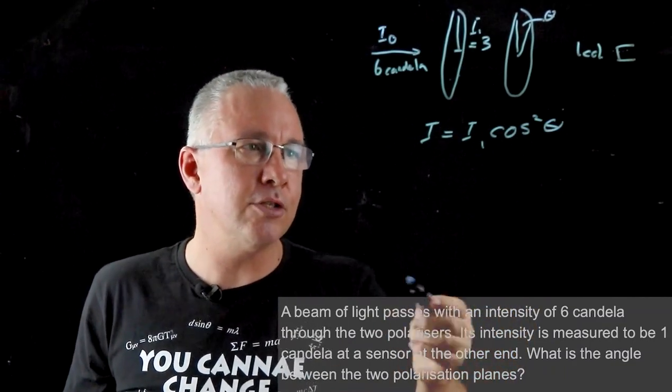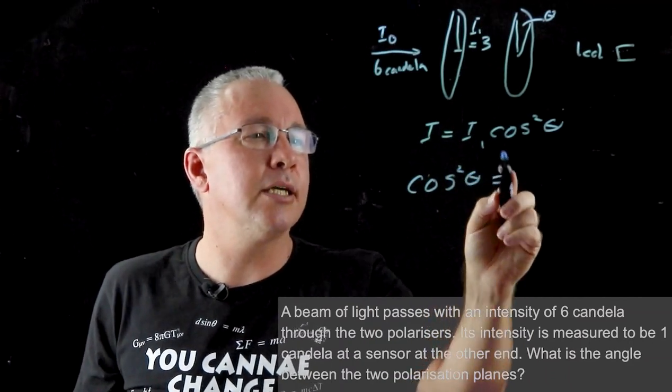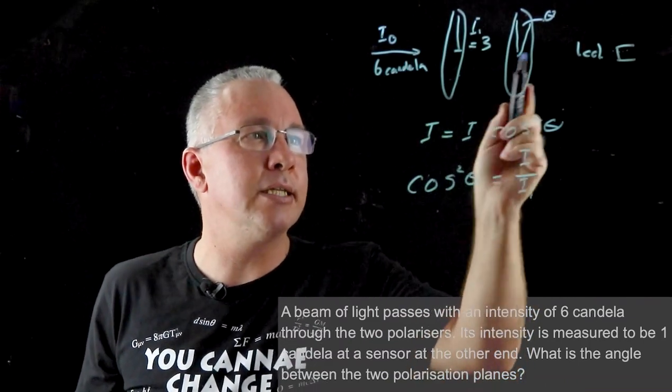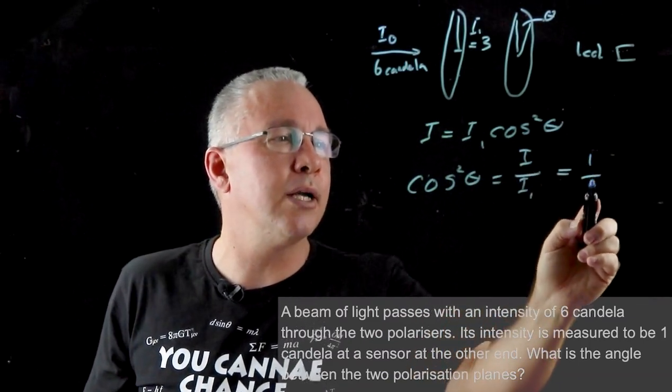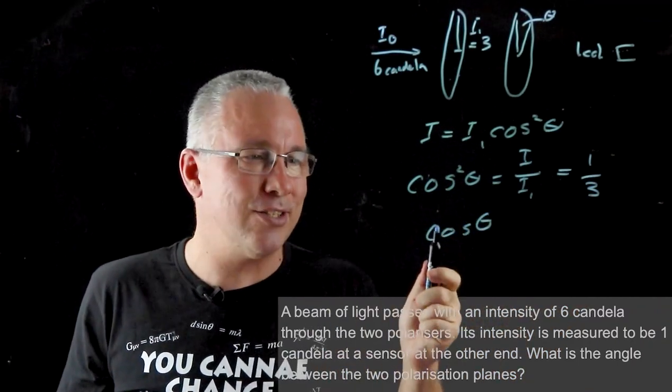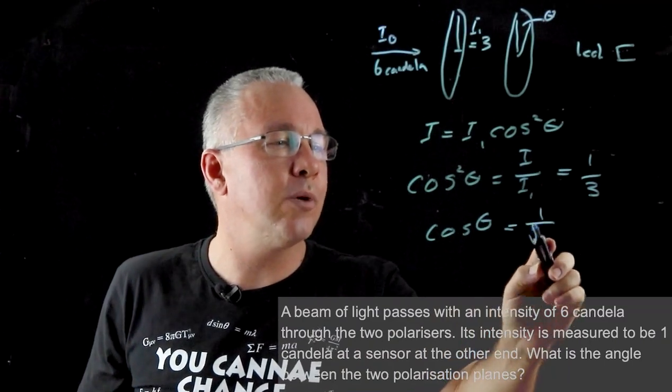So now if I rearrange that, I get cosine squared theta is equal to, in this case, I over I1. Now this is 3, this is 1, so that is equal to 1 over 3. It's not rocket science to show that therefore cos theta is equal to 1 over the square root of 3.